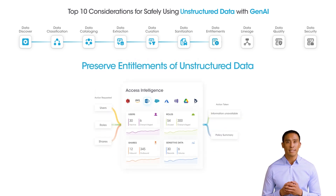Enterprise entitlements in source systems must be preserved as data moves to AI models. This will enable organizations to ensure that only authorized users access relevant data via Gen AI prompts.